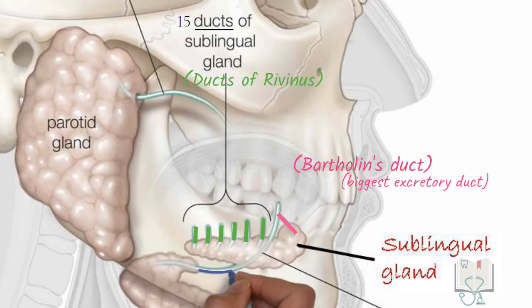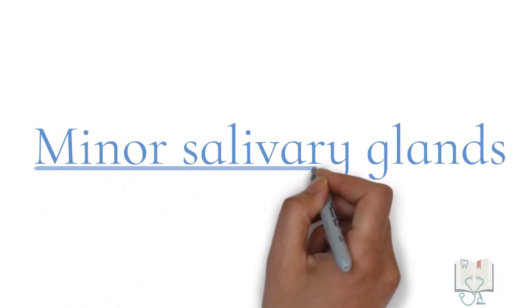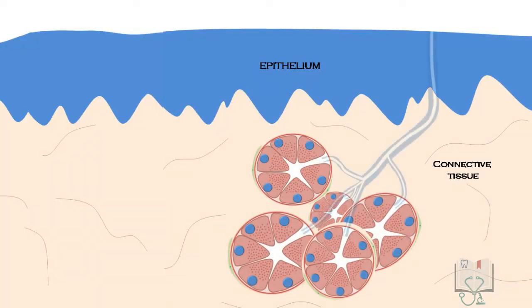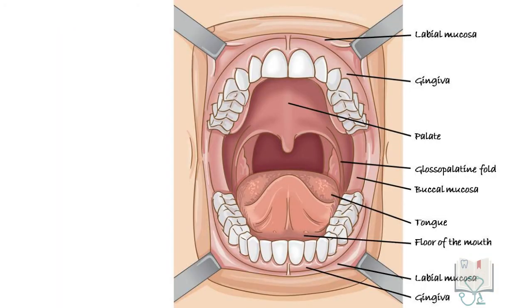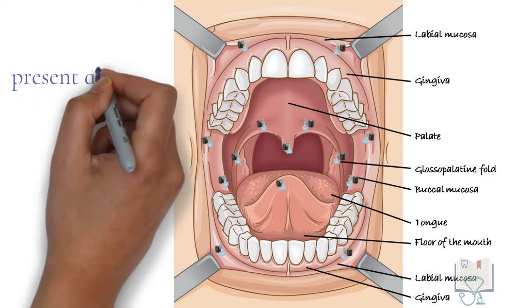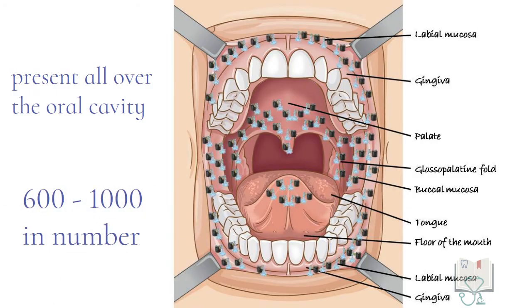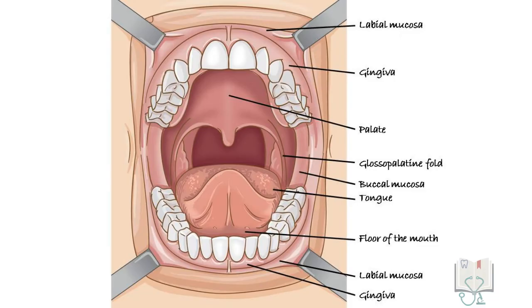Bartholin's duct is the sublingual gland's biggest excretory duct; it does not open in the oral cavity but joins Wharton's duct from the submandibular gland. Minor salivary glands are located just beneath the epithelium. They are small, have a short excretory duct, and unlike major salivary glands, a fibrous capsule is not present. They are present all over the oral cavity and number around 600 to 1000, collectively producing only 5% of total saliva. The majority are mucous glands.